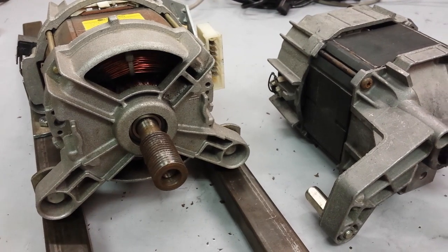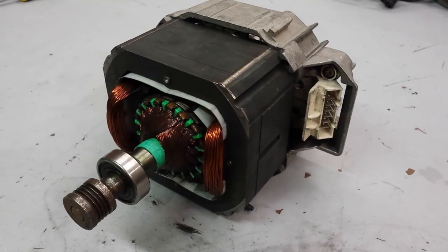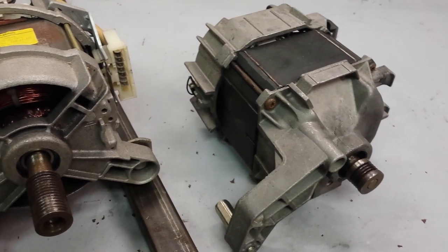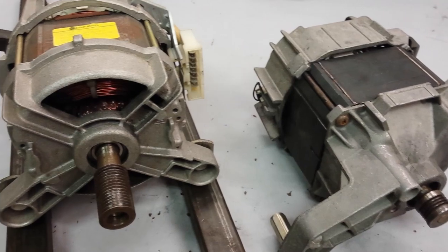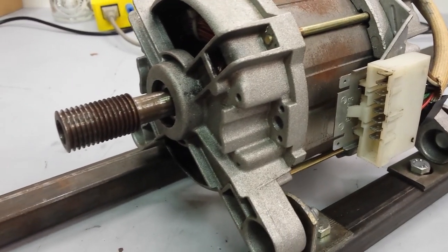Many washing machines contain universal brushed motors. They can be easily powered either by DC or AC current. As they are very versatile they can be applied in lots of different home appliances such as mixers or drills.